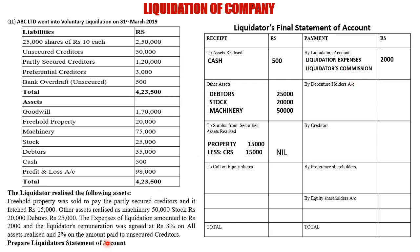We total the receipt side: Rs. 95,500 is the total. Now to find the liquidator's commission: 3% on assets realized can be calculated since we know those values. But 2% is on unsecured creditors, which is not available yet — it comes after preferential creditors. So we solve up to preferential creditors first, then get the unsecured creditor value to find the remuneration.